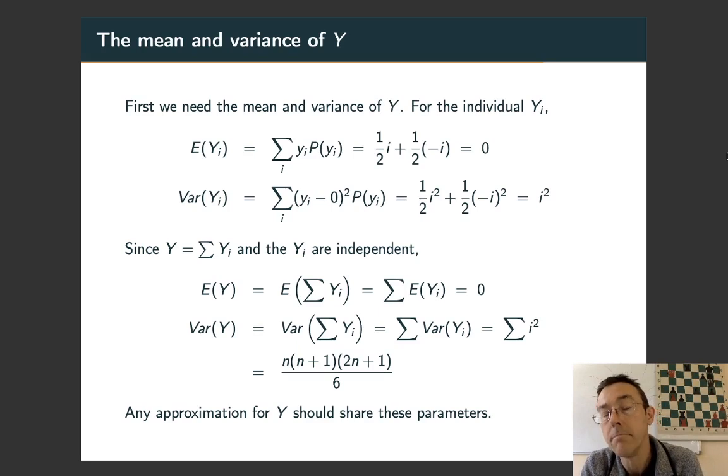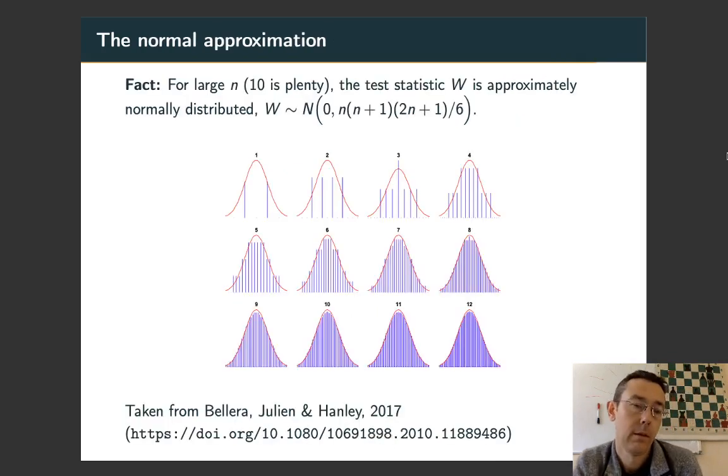So, we're going to do it by getting the mean and standard deviation, or I guess the mean and variance of the individual YIs. So, these are pretty direct to calculate because each of the YIs only has two values. We get the expected value of YI is zero and the variance is I squared. Adding them up, in the variance case taking into account the fact that the YIs are independent, we get the expected value of Y is zero and the variance of Y is going to be N times N plus 1 times 2N plus 1 over 6. So, if we're looking at a normal distribution to approximate the distribution of Y, it should have this mean and variance.